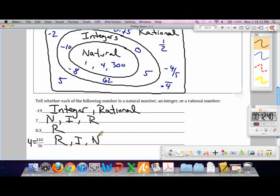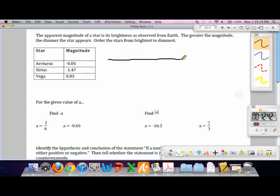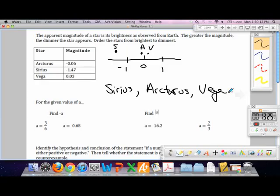Let's draw a quick number line. If this is zero, here's negative one. Here's one. Let's fit all these on. Negative 0.06 is like right here. Negative 1.47 is like over here. Vega is positive, so it's a little bit over here. Which one's the brightest star, then? Farthest left. So from brightest to dimmest would be Sirius, Arcturus, and Vega. From brightest to dimmest, from least to greatest, in this diagram.